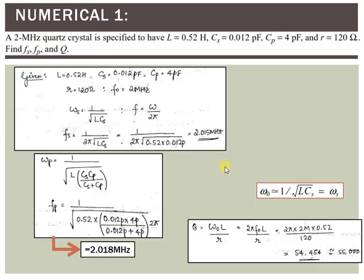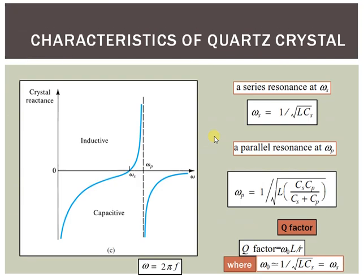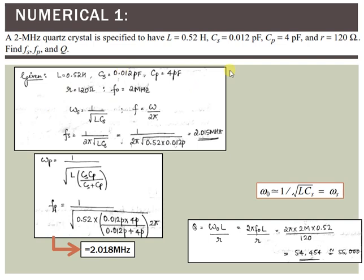Moving on to the first numerical: a 2 MHz crystal is specified with L = 0.52 H, Cs = 0.012 pF, Cp = 4 pF, and R = 120 Ω. We are asked to find Fs, Fp, and Q. Since ω = 2πF, we have F = ω / (2π). To compute Fs, we use ωs = 1 / √(L·Cs), then Fs = ωs / (2π), which gives a value of 2.015 MHz.